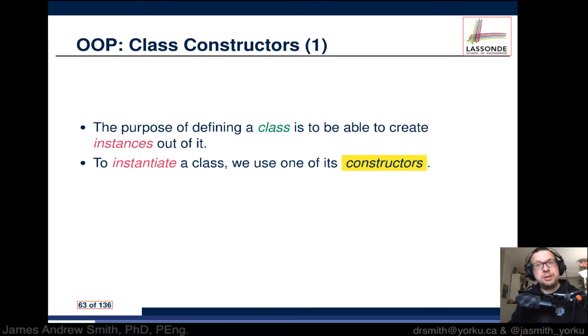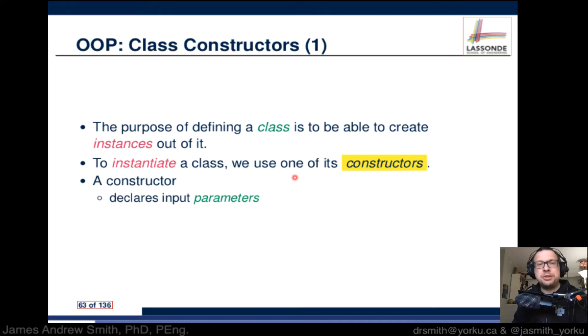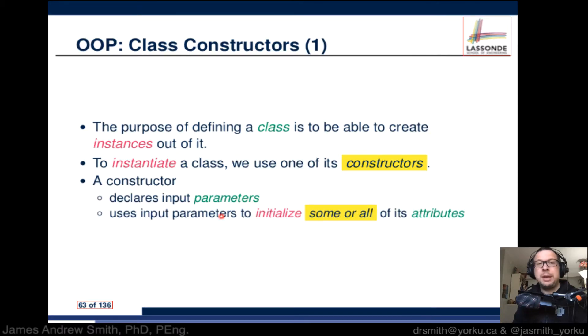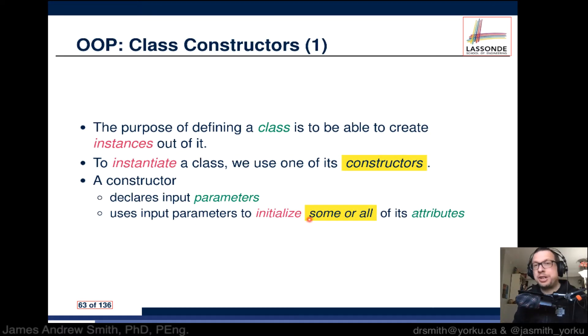To instantiate a class, that is to construct an object from the class, we use constructors. A constructor declares input parameters and uses input parameters to initialize some or all of its attributes.